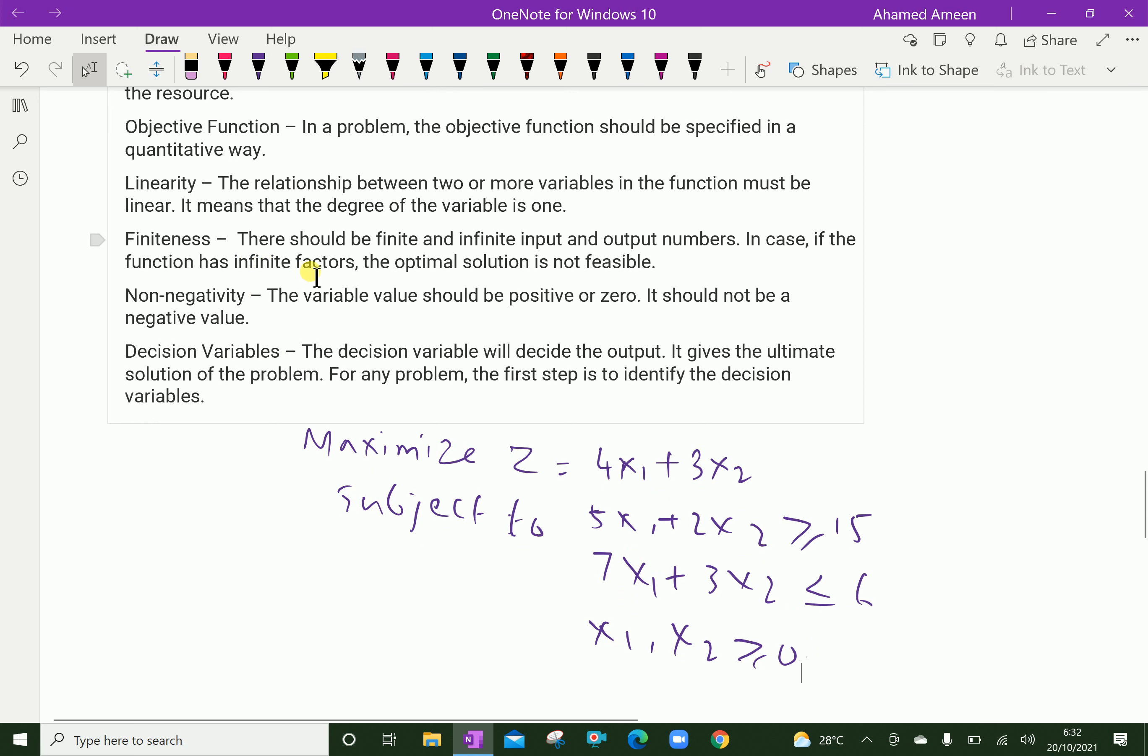Finiteness. There should be finite and not infinite input and output numbers. In case if the function has infinite factors, the optimal solution is not feasible. So, to make it feasible, that finiteness must be considered. That means there should be a finite number of solutions.